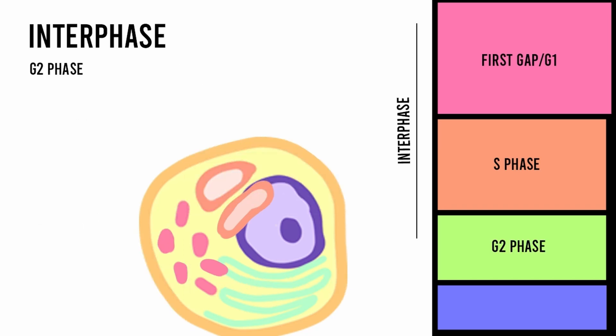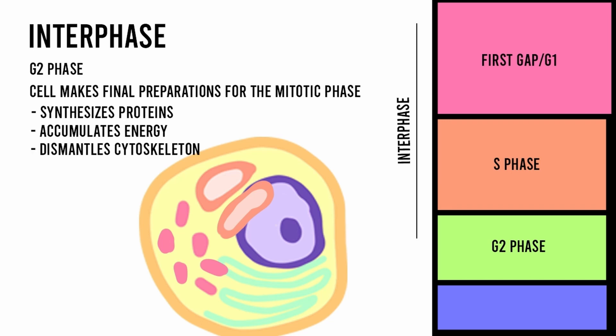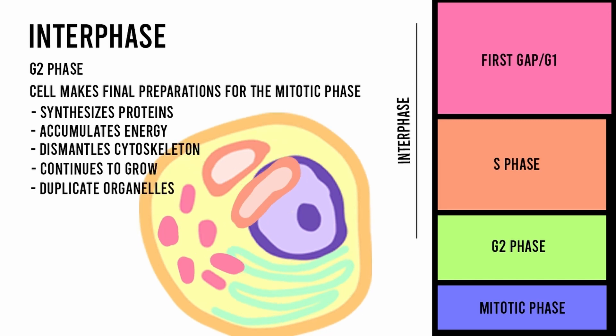Finally, in the G2 phase, the cell makes the final preparations needed before entering the mitotic phase. During the G2 phase, the cell synthesizes more proteins, accumulates energy, and dismantles its cytoskeleton to provide resources for the mitotic phase, during which the sister chromatids will be moved around. The cell also continues to grow and duplicates some of its organelles.